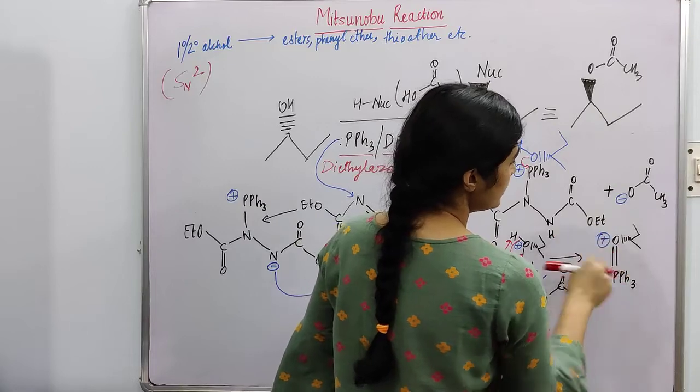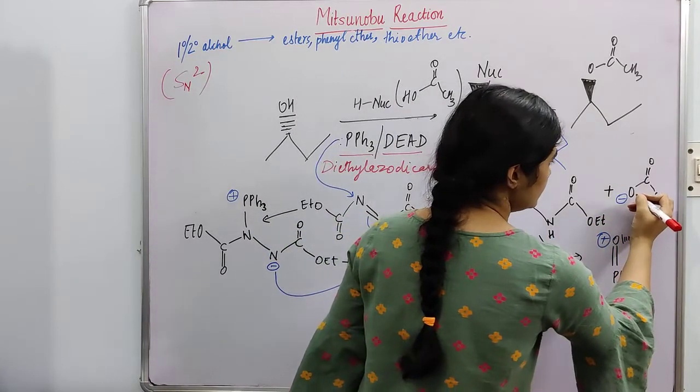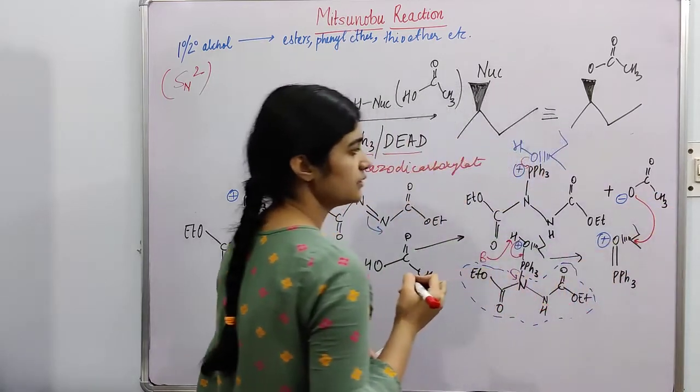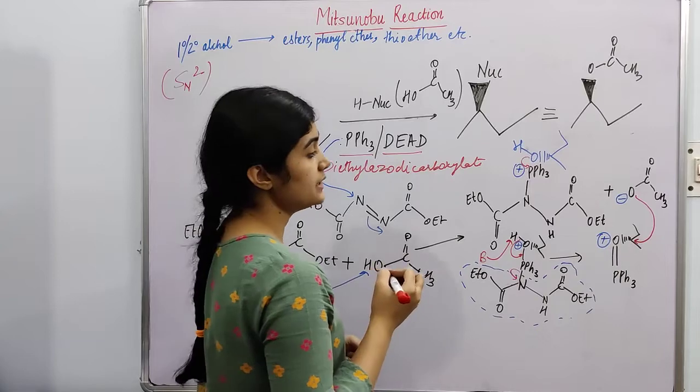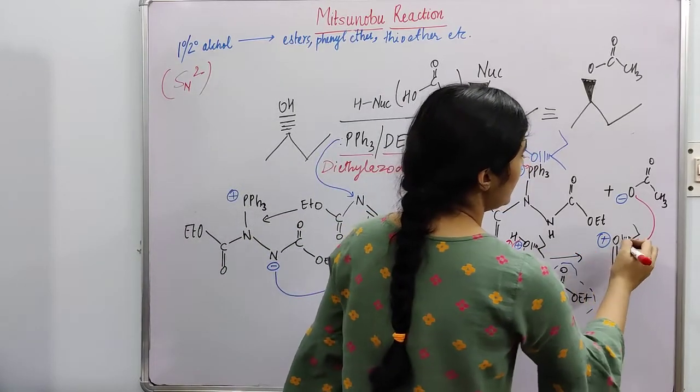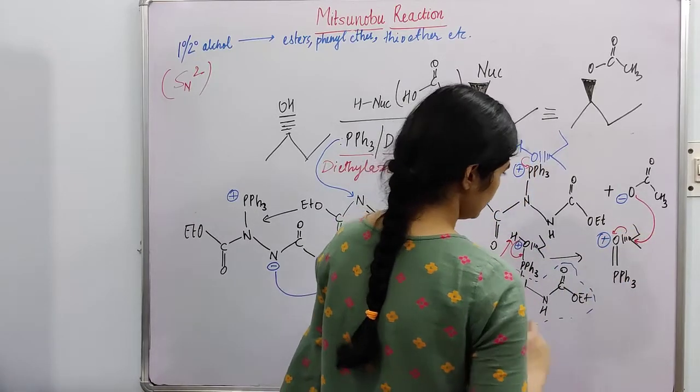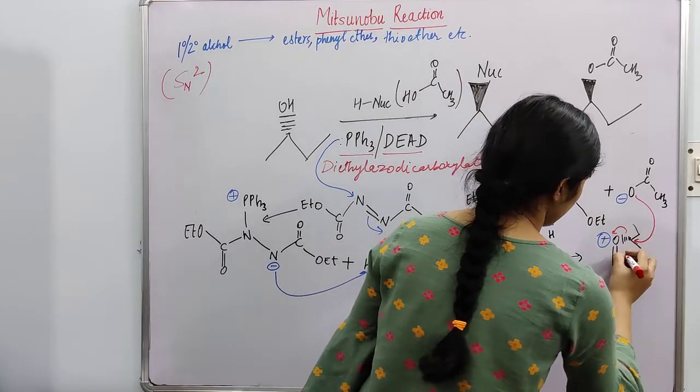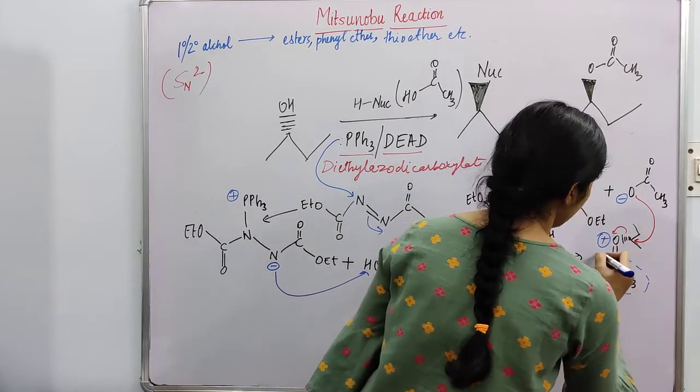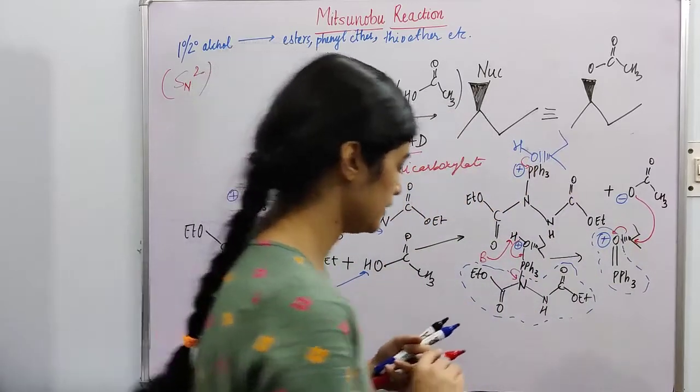These will react together. And this oxygen, or you say this nucleophile, will attack this carbon atom, and this whole group will be leaving. And I will again draw a dotted line around this. So this group will be leaving here.